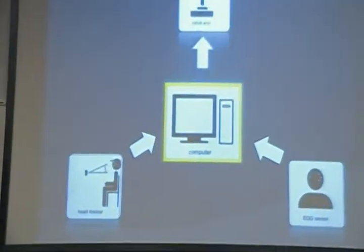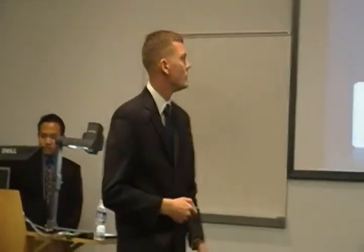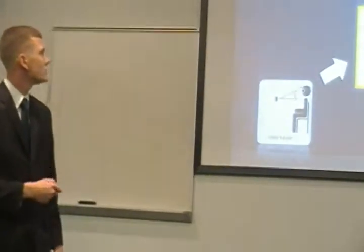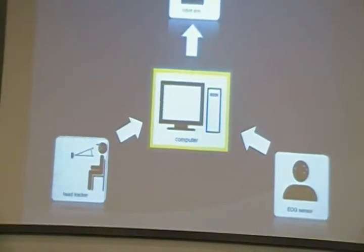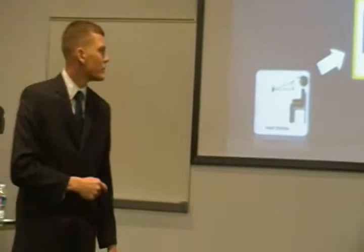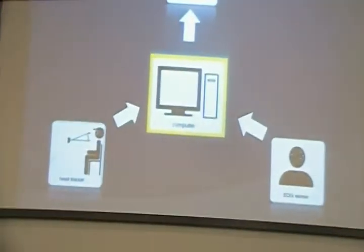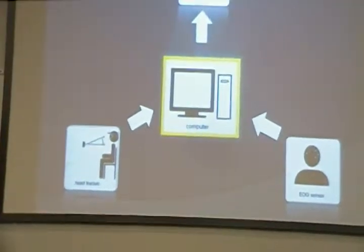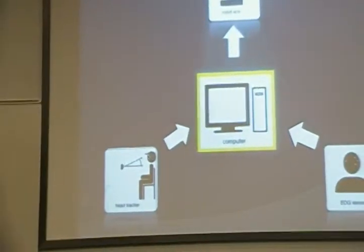The way we integrate all these things together is with a personal computer desktop. We have USB connections from all three external components. Windows XP runs on this computer with three separate programs, each corresponding to one of these external elements. The two input elements — the EOG sensor and the head tracker — write data to data files that are then read by the program that operates the robotic arm.